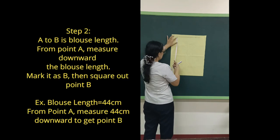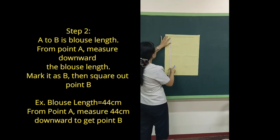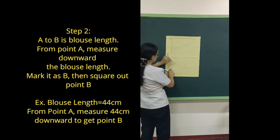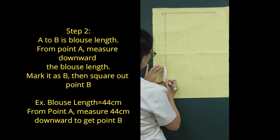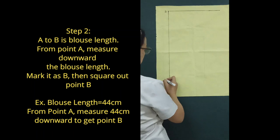Step 2: A to B is blouse length. From point A, measure downward the blouse length. Mark it as B. Then square out point B.